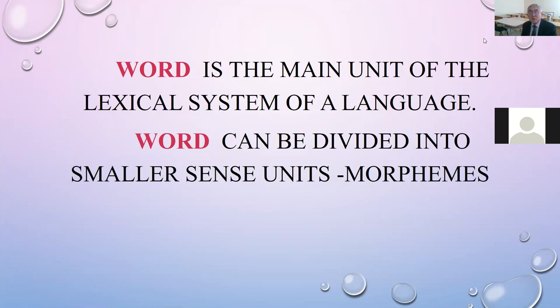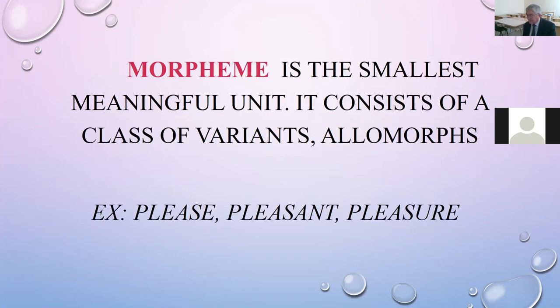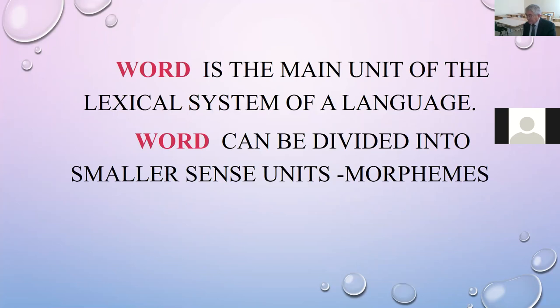What is the main unit of the lexical system of a language? The word can be divided into smaller sense units called morphemes. The main unit of the lexical system resulting from the association of sounds with meaning is a word. It is the smallest language unit which can stand alone as a complete utterance. A word can be divided into smaller sense units: morphemes.